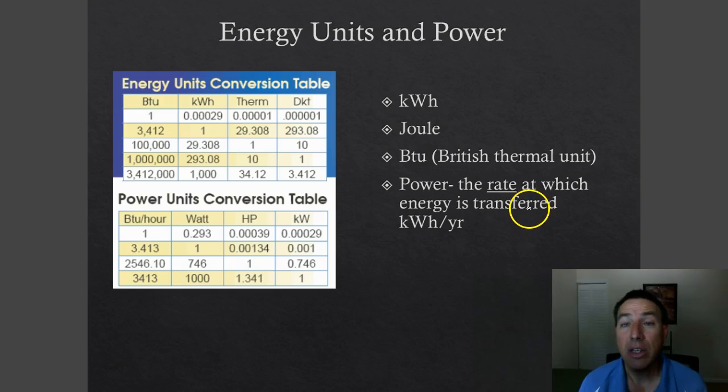One of the major things about energy is units and power. Kilowatt hour is the most widely used energy unit you'll see in this class. Joule is another energy unit. In fact, joule is the SI unit of energy. Another type is BTUs or British thermal units. You will see these quite a lot because these measure heat, and heat is a type of energy. Power is something totally different. Power is the rate at which energy is transferred from one place to another, and we usually measure that in unit over a time period, like kilowatt hours per year or BTUs per hour.